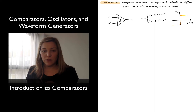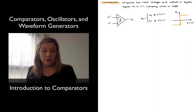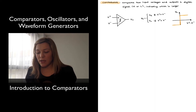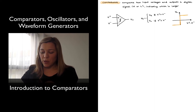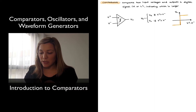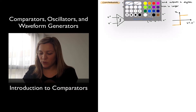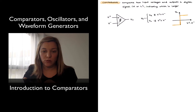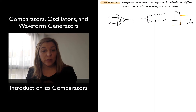Typically, the comparator is represented with the same symbol as an amplifier — the triangular symbol with the differential input and the output. But normally you will see a little symbol indicating the comparator, and sometimes you will even see it with a threshold line across through the middle, just to indicate that this is a comparator as opposed to an op-amp.